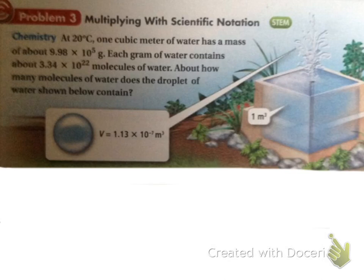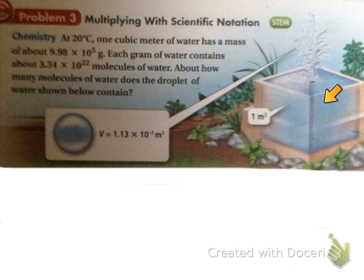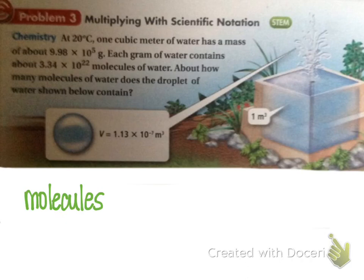The last example is a real-world problem. At 20 degrees Celsius, one cubic meter of water has a mass of about 9.98 times 10 to the fifth grams. Each gram contains about 3.34 times 10 to the 22nd molecules of water. We need to find how many molecules a droplet contains, going from cubic meters to grams to molecules using unit analysis.